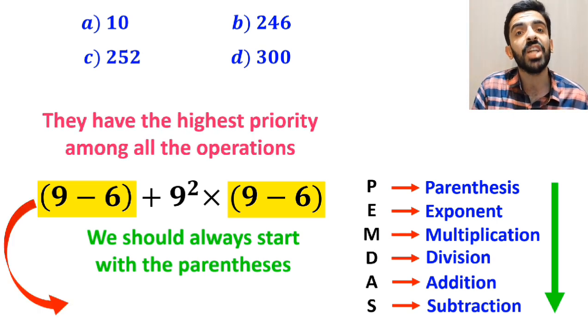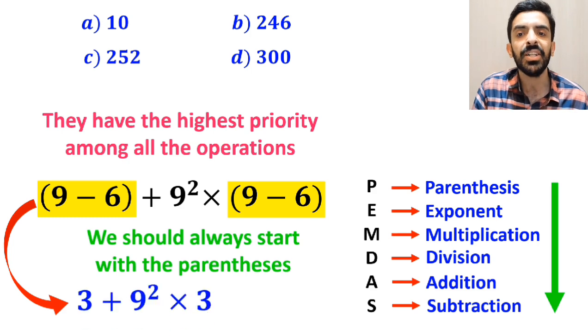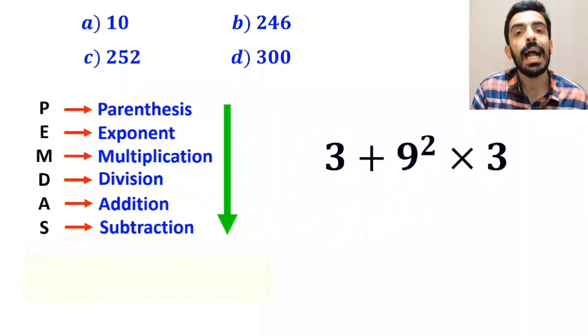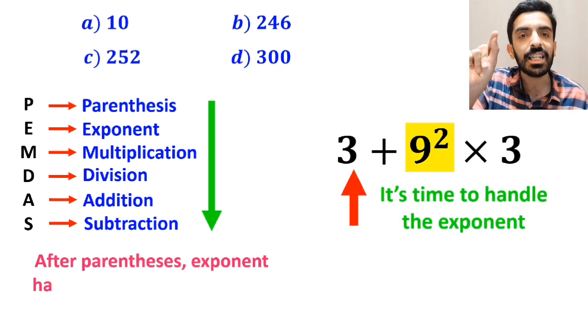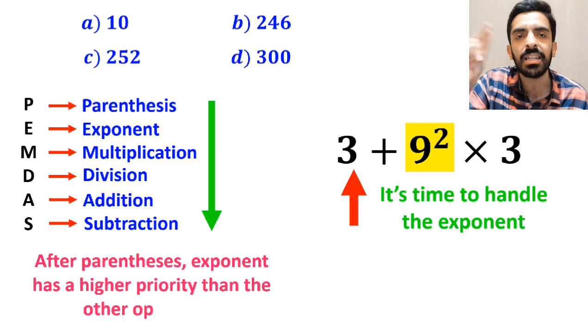Instead of the original expression, we can rewrite it as 3 + 9² × 3. Next, it's time to handle the exponent, because after parenthesis, exponent has a higher priority than the other operations.